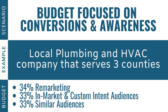For scenario two focused on conversions and awareness: put as much as possible into remarketing, at least one third, then put the rest into in-market, custom intent, and similar audiences. Split your targeting into different ad groups. If you're doing plumbing and HVAC, separate that targeting as well. For this one I'd probably have six total ad groups: a separate ad group for in-market HVAC, in-market plumbing, and the same thing for custom intent. Separate the ad groups based on what people are looking for and the targeting you're using. Over time you'll learn what performs best.